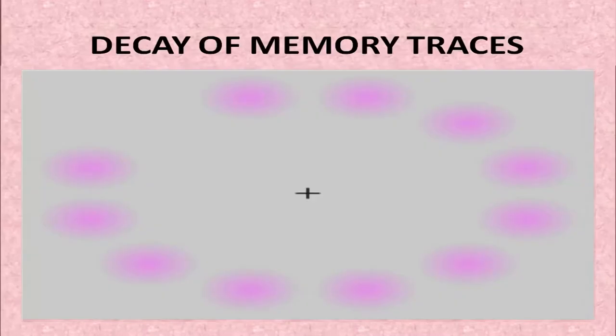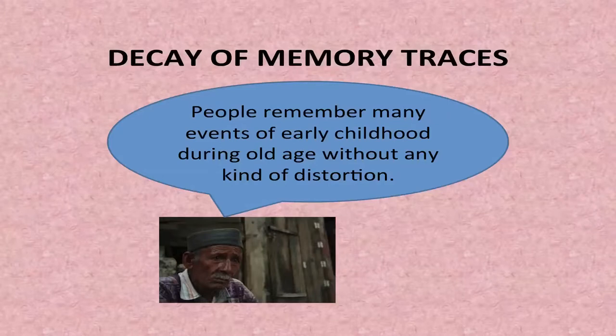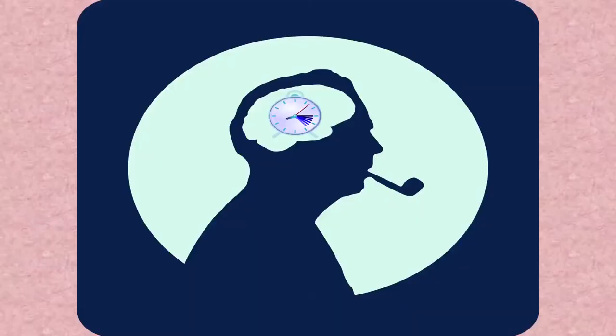Let us begin with the various causes of forgetting. The first is known as decay of memory traces. It is a common experience that memories of many events and experiences become dim over time, like the colors of a photograph that are bleached by the sun. This notion was proposed by many early psychologists as a general cause of forgetting. However, people remember many events of early childhood during old age without any distortion, so decay cannot be considered a general cause of forgetting.